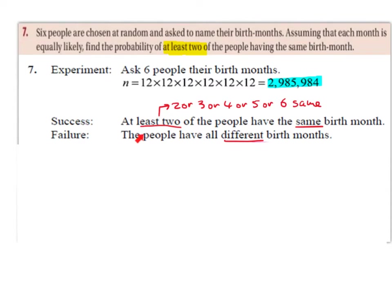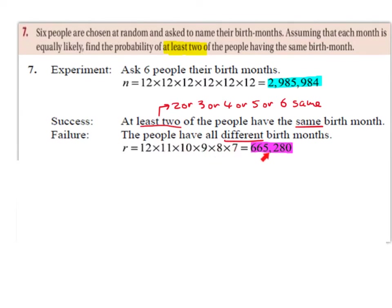So it's going to be much, much quicker to work this out, and then take our answer away from one, and then divide whatever we get by 2,985,984. So the failure is going to be 12 by 11 by 10 by 9 by 8 by 7, which will be 665,280.